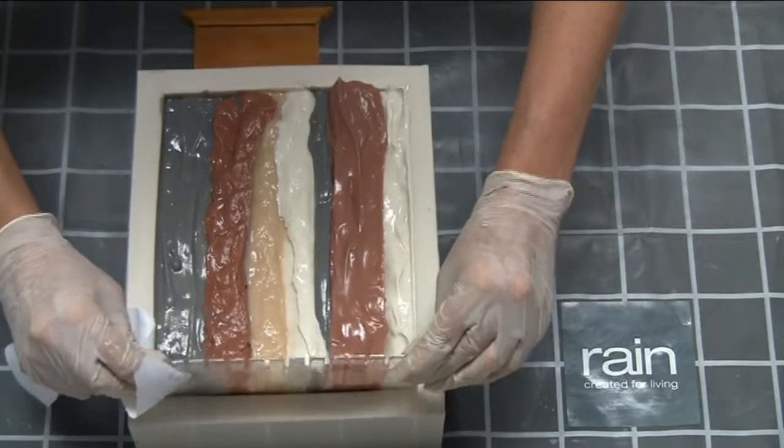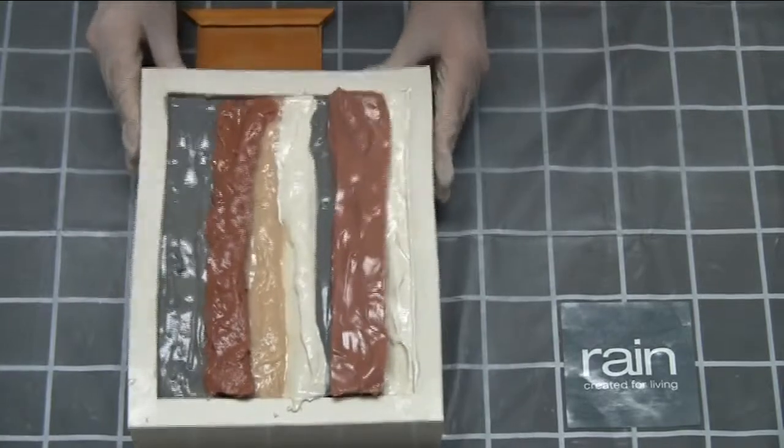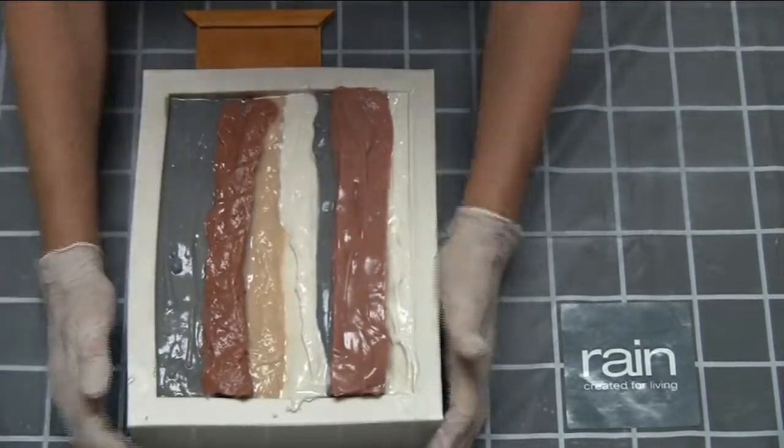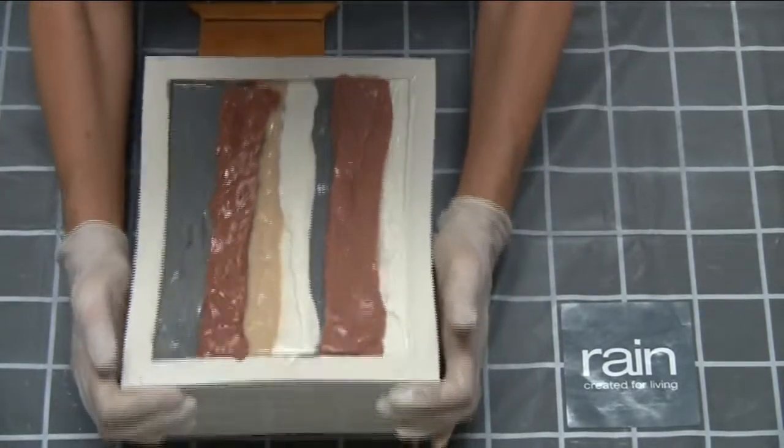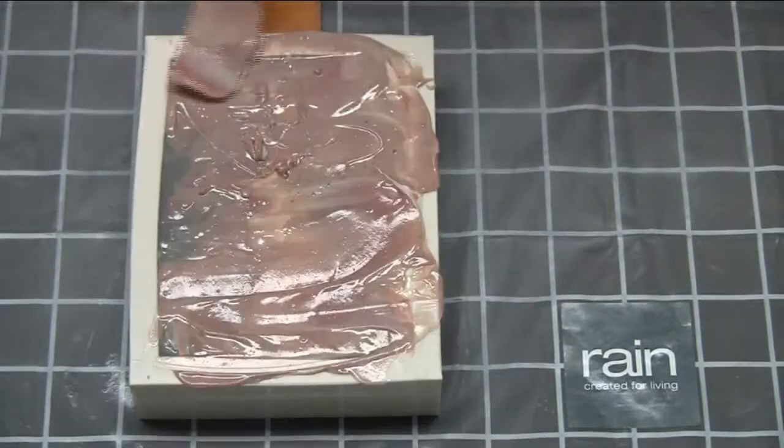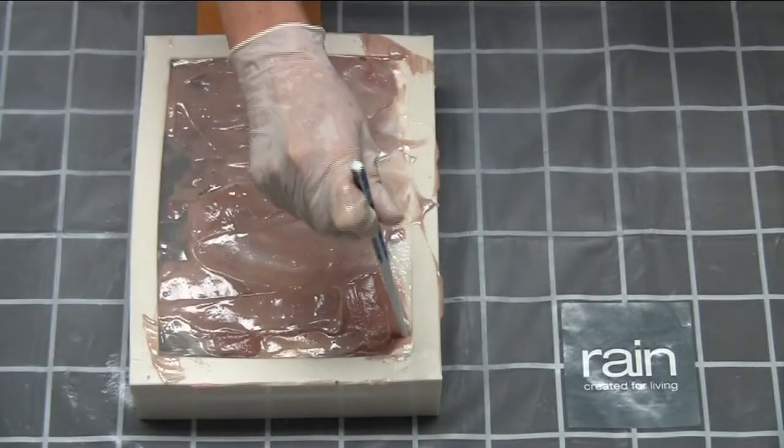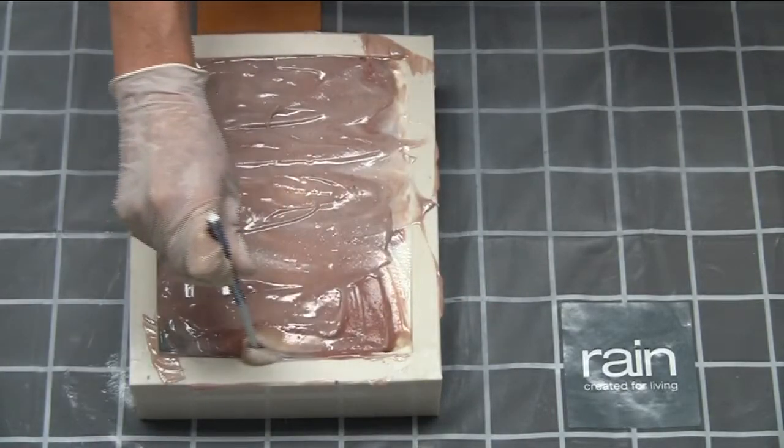Don't worry about the slightly untidy top. Then the end pieces. Give the mold a good shake to make sure that there are no air pockets. Bump it around a bit. Then just smooth off the top.